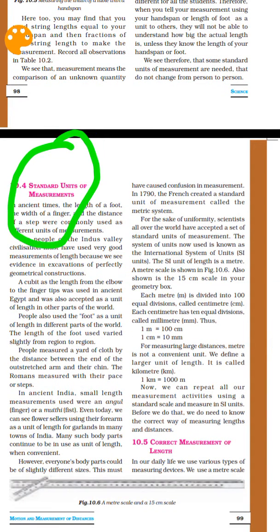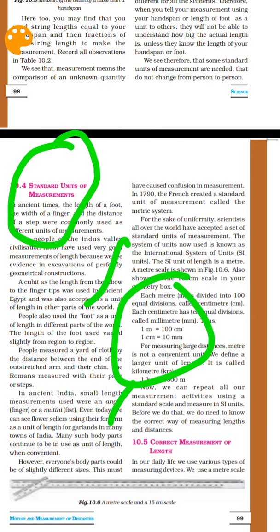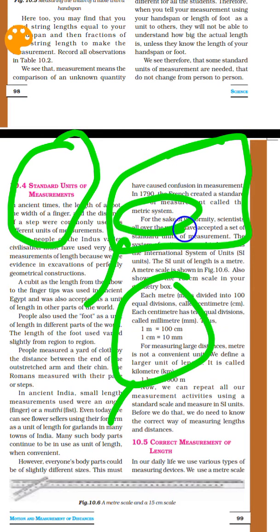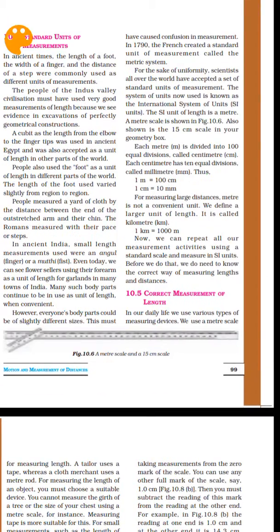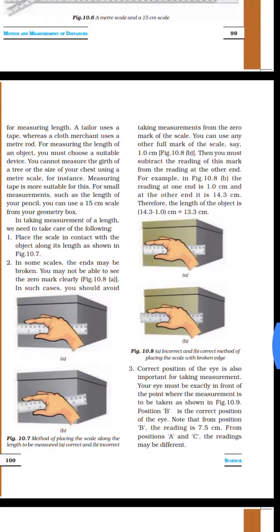There are standard units of measurements. We started to use standard units of measurement. The length and breadth are easy to measure. One meter equals one hundred centimeters. One centimeter equals ten millimeters. The French created a standard unit of measurement called the metric system. The metric system — kilometer equals 1000 meters — is used everywhere. We use centimeters and millimeters for smaller measurements.